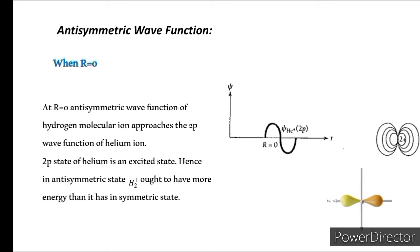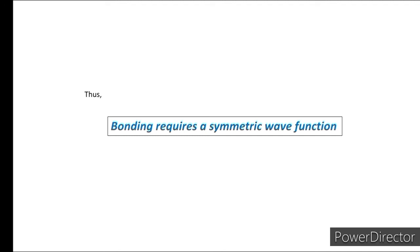When R approaches zero in the antisymmetric case, the wave function shows different behavior: ψ_A does not become the 1s wave function of the helium ion, but instead approaches the 2p wave function of the helium ion, which has a node at the origin. The 2p state of helium ion is an excited state whereas 1s is the ground state, so the hydrogen molecular ion in the antisymmetric case has more energy than in the symmetric case, as more energy is required to overcome the repulsive forces. We conclude that bonding requires a symmetric wave function, and when R is comparable with a₀, the bond is stable.